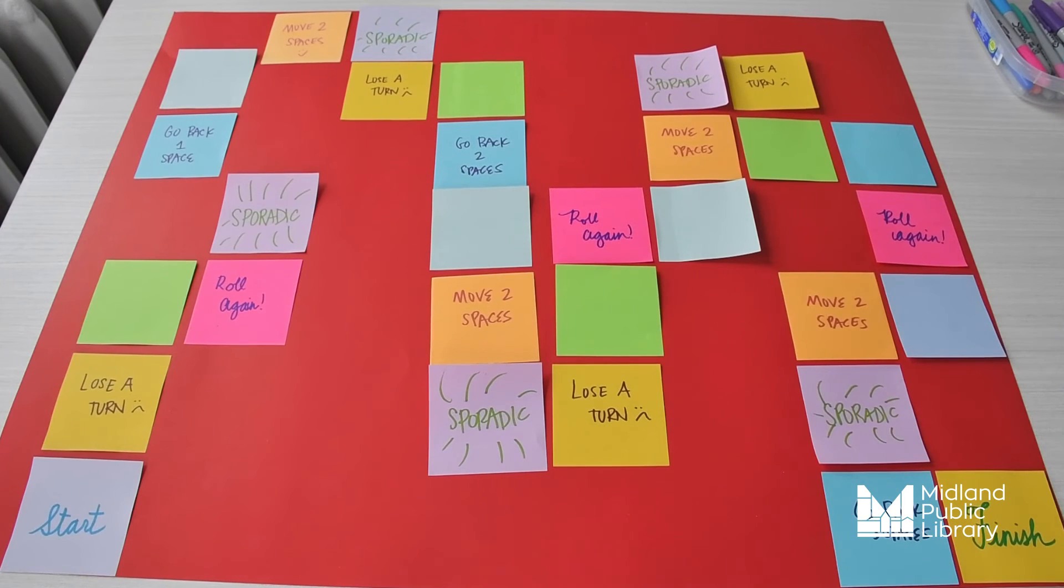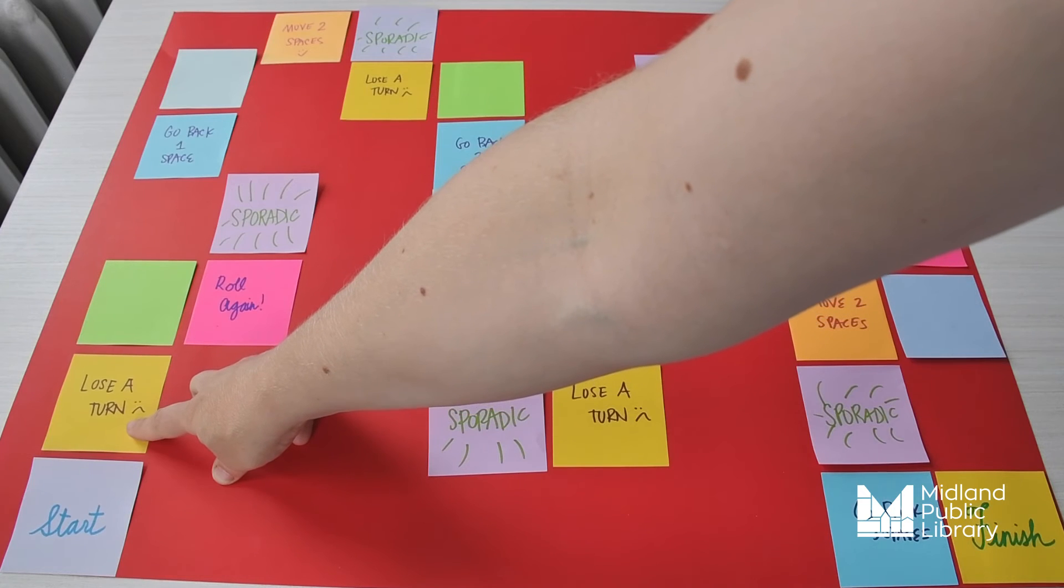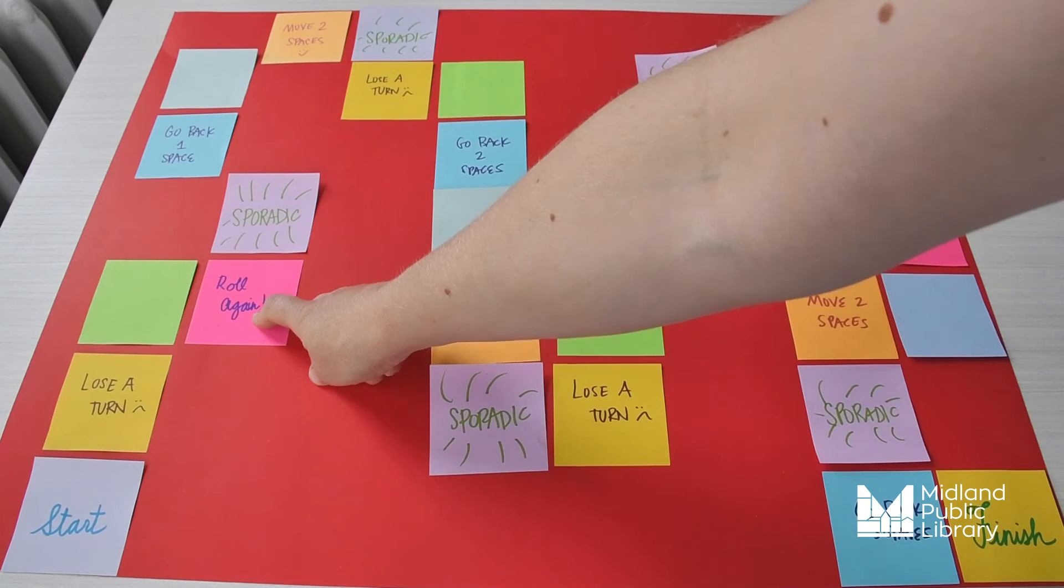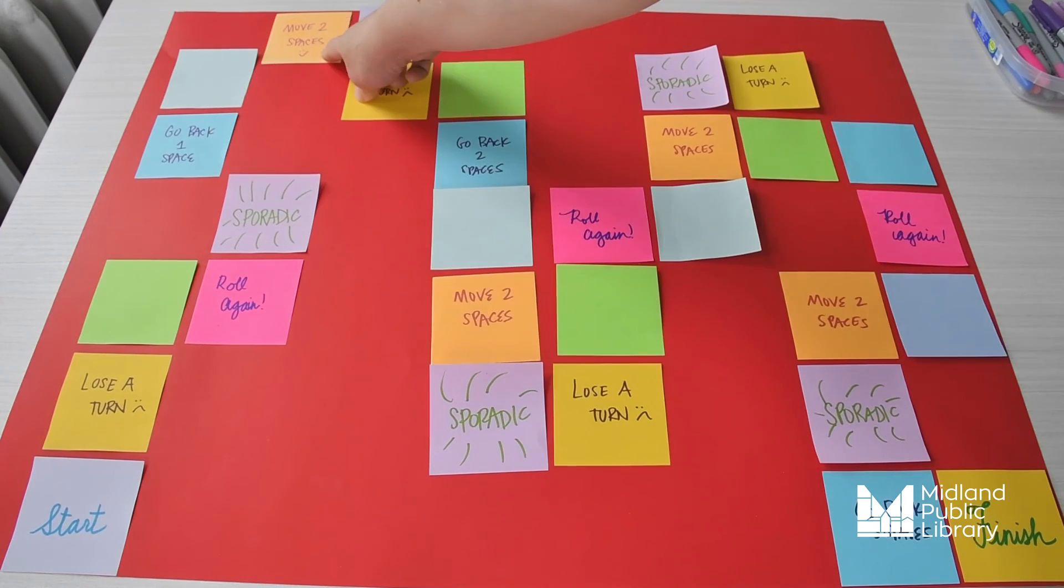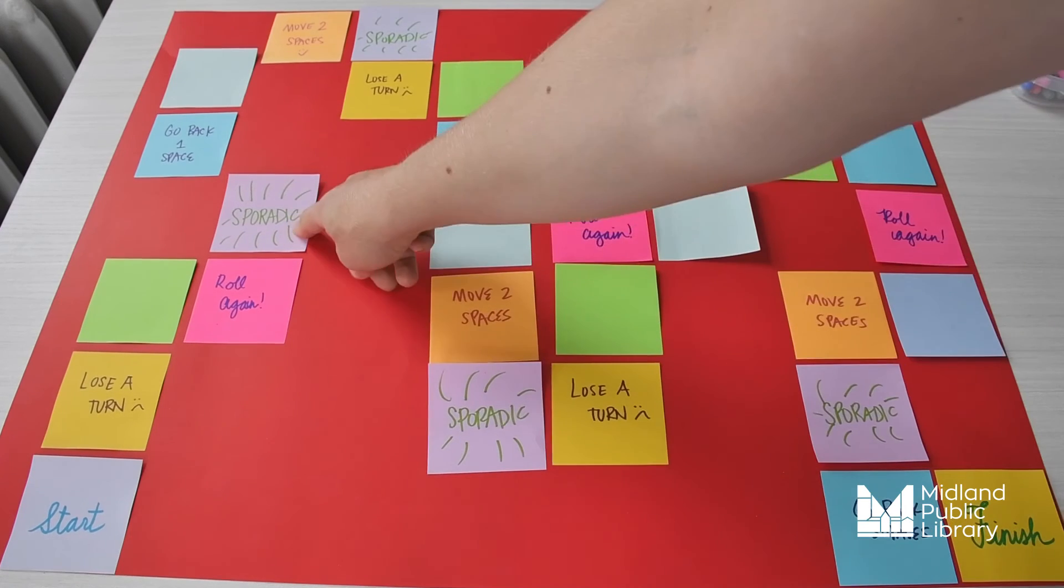For my board, I created lose a turn spaces on yellow cards. Roll again on the bright pink. Go back on the darker blue. Move spaces on the orangey-yellow color. And then I have a whole bunch of sporadic cards.